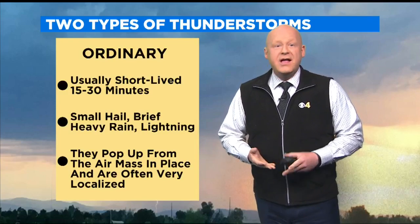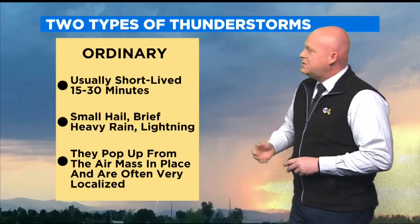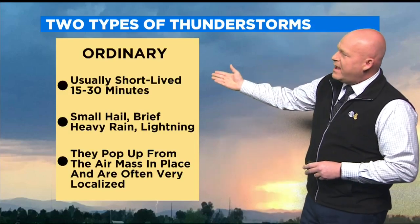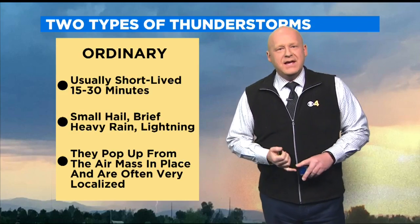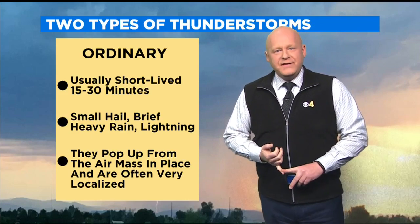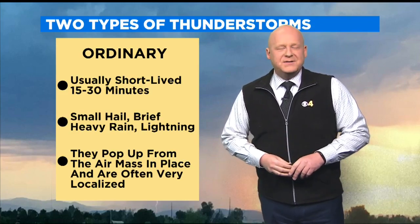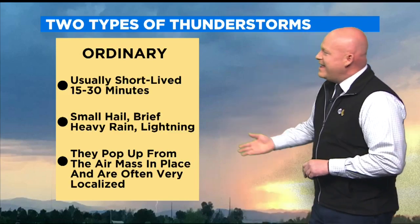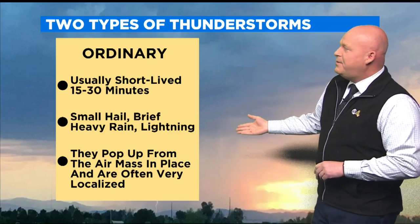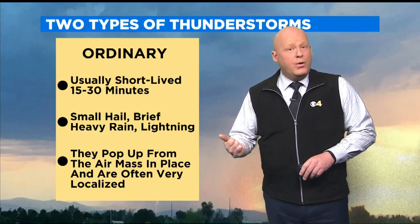The first type is called the ordinary thunderstorm. Ordinary storms only last about 15 to 30 minutes. They normally feature some small hail, maybe a little bit of brief rain, some lightning and thunder, but that's usually about it. They pop up because of the air mass that you have in place.